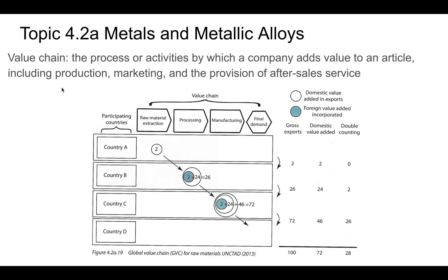Let's talk about value chains. This gets to a little bit of the international aspect of mineral extraction. A value chain is a process or activity by which a company adds value to an article, including production, marketing, and the provision of after-sales services. What we're really looking at is the value added by production. When raw materials are extracted, you get a very small amount of money for them — ores generally don't have a large value. As you process the ore and smelt it into metal, that's where you're adding value and the price of the material goes up.